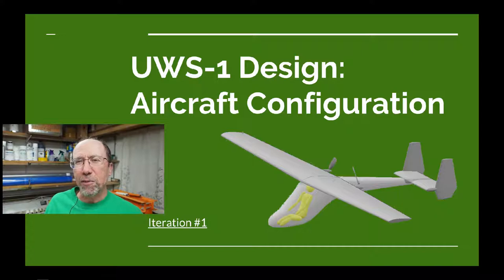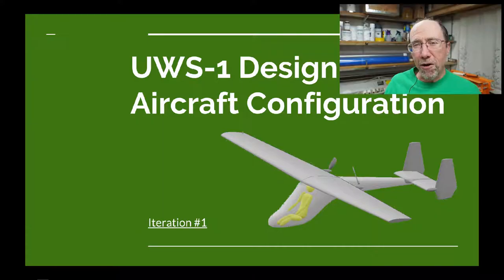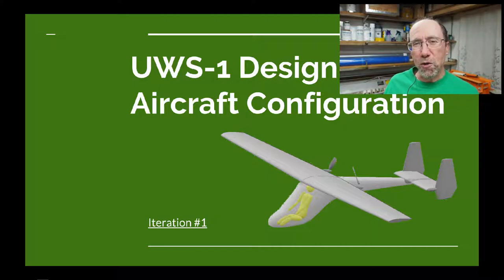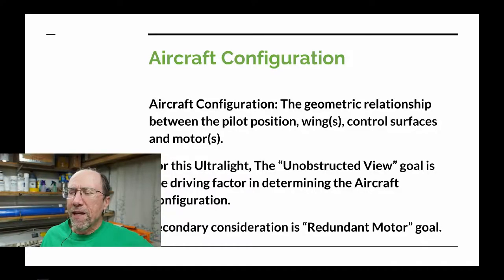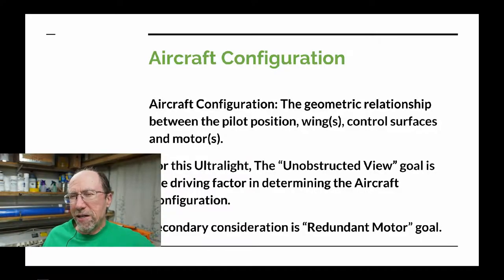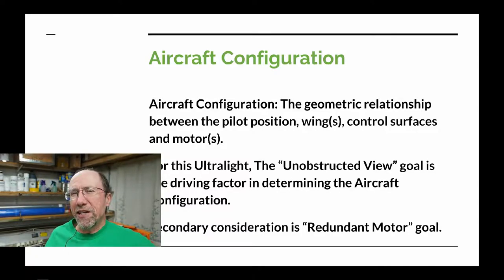We're starting to get into the design of the airplane. If you'd like to look at the video of the goals, there's a card in the upper right-hand corner of the screen you can click on. The first step in our more detailed design, after we came up with the goals, is the aircraft configuration — the relationship of the airplane's main wing, control surfaces, and pilot to each other.